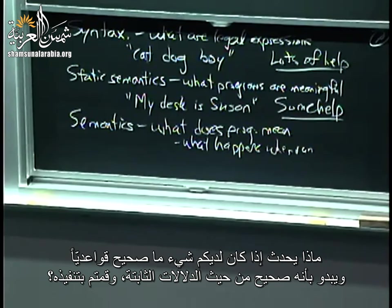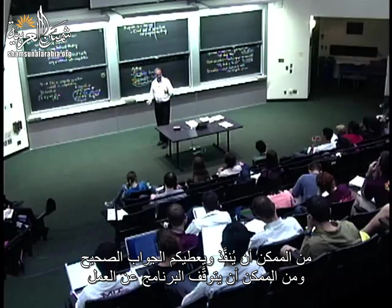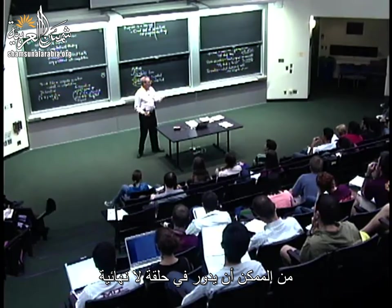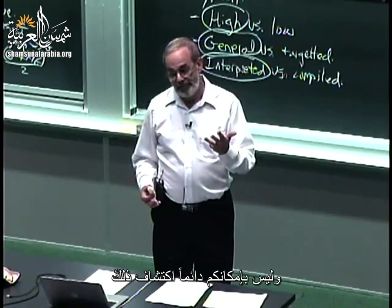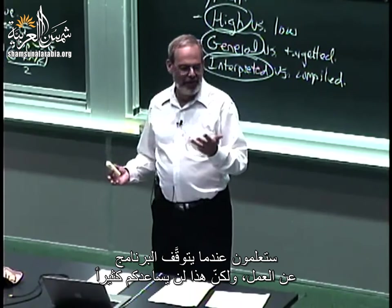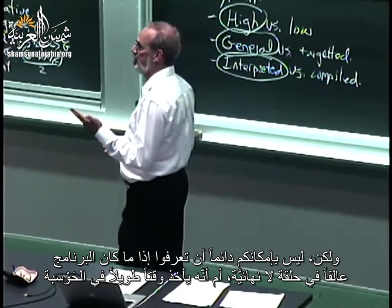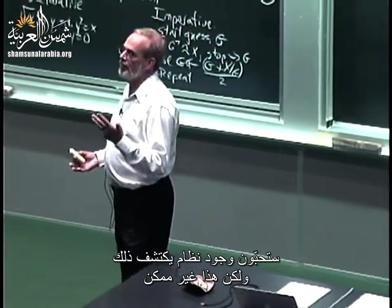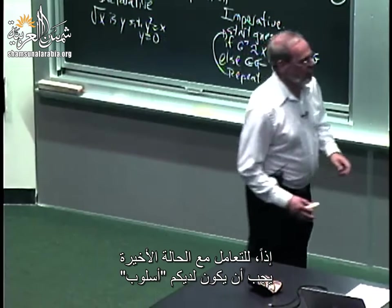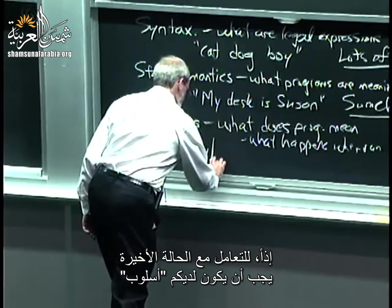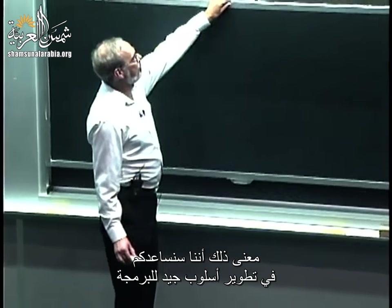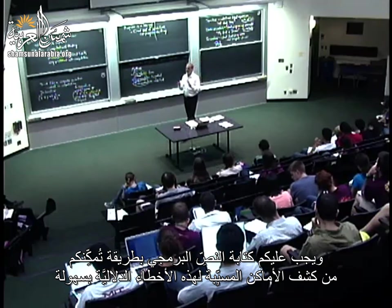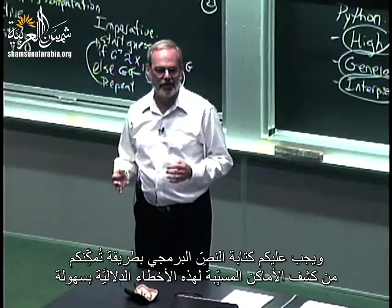If you have something both syntactically correct and with apparently correct static semantics and you run it, it could run and give you the right answer; it could crash; it could loop forever; or it could run and apparently give you the right answer but actually be wrong. You can't always tell. To deal with this, you need to develop good programming style — we're going to try to help you write in a way that makes it easy to spot those semantic bugs.